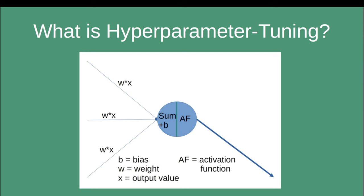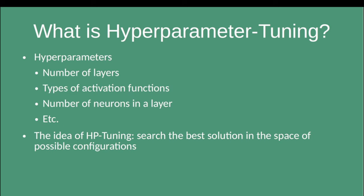At its core, training a neural network is the adjustment of the weights and biases — these are essentially the parameters that training affects. But there are a number of other parameters which are not affected by training but are set by the architect of the model, namely by you, the person coding the model. To name a few: the number of layers, the activation functions being used (sigmoid, ReLU, or something else), and the number of neurons in a layer. This list is by no means exhaustive — there are a huge number of parameters you have to decide when creating the architecture.